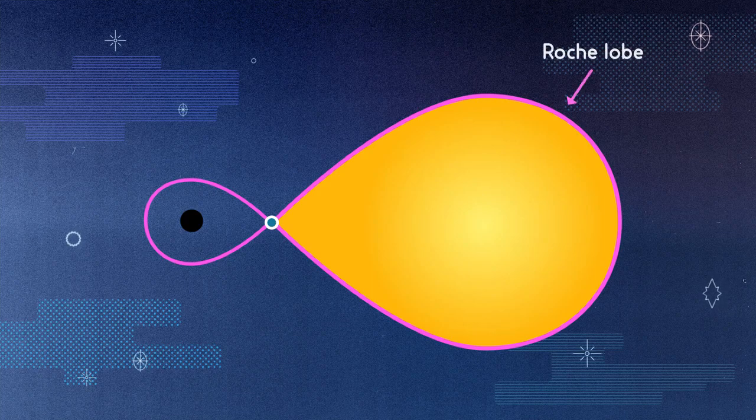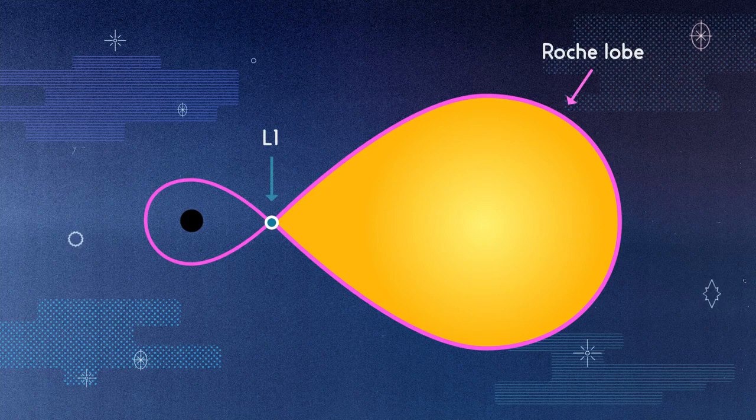So far, we have looked at material being stripped away from the surface of the star as it overflows its Roche lobe. This material then crosses the first Lagrange point, L1, and starts falling towards the black hole.